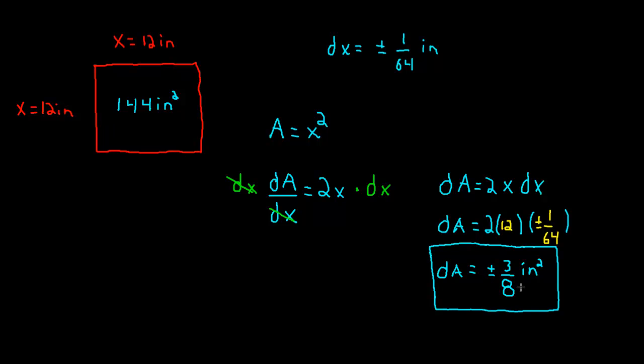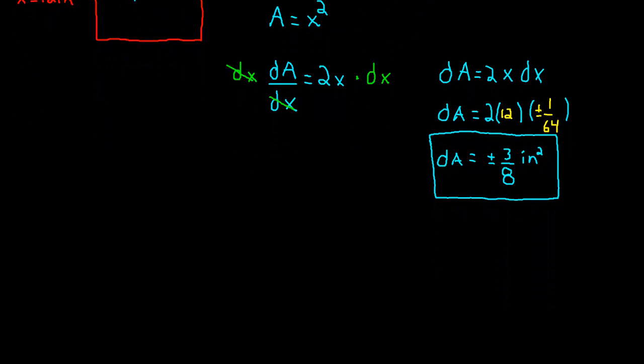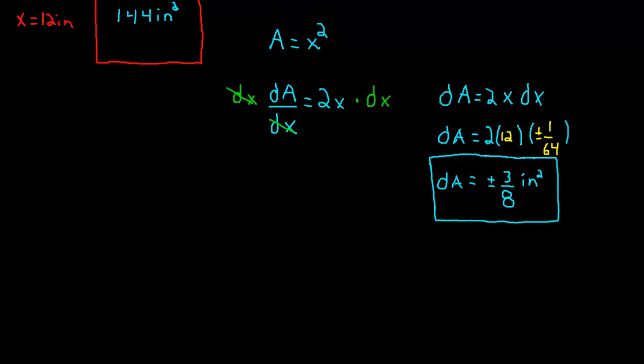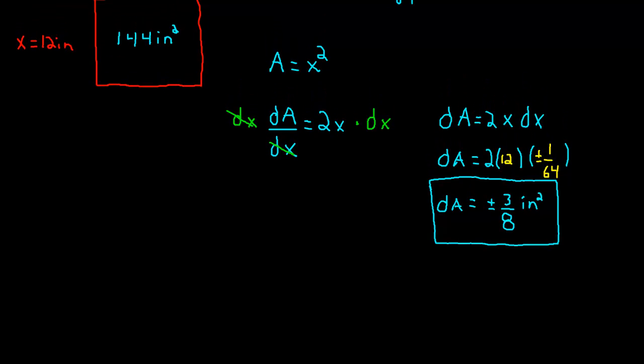So that's the error that has been propagated through to the area. Well, what if, how could we make more meaning out of that? Is that, we have to decide, is that an acceptable amount of change in the area? We might decide that being off 1/64th of an inch, that's pretty good.